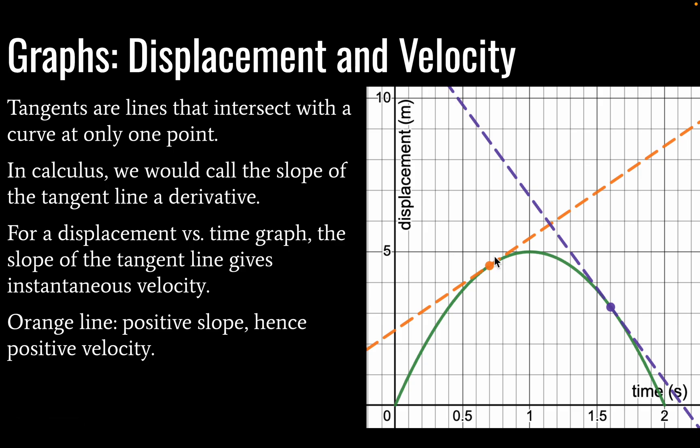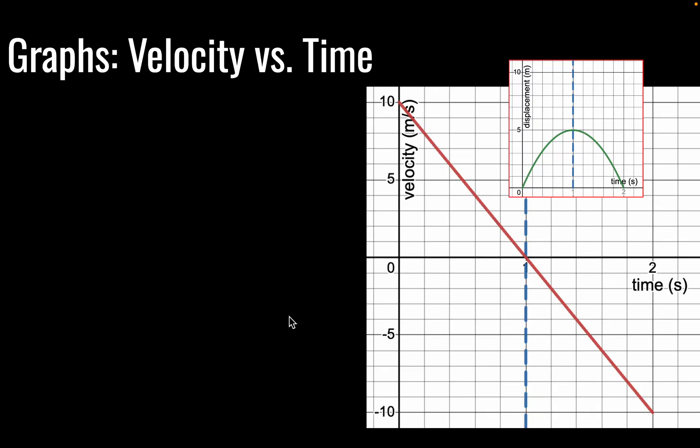And then our velocity will become negative, which we see over here. So, this orange line is showing a positive velocity. And our purple line is going to show a negative velocity here on the other side of the apex of our object.